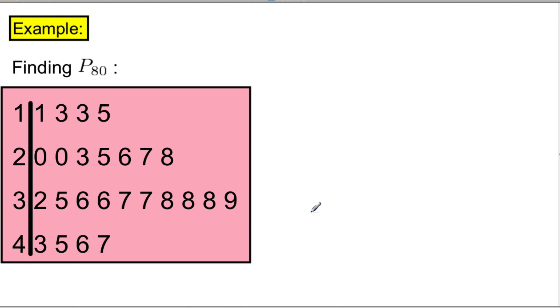Now, let's look at P80. In this one, k is equal to 80, and of course, n is equal to 25. So, L will be 80 over 100 times 25. Once we simplify that, we get L equal to 20.